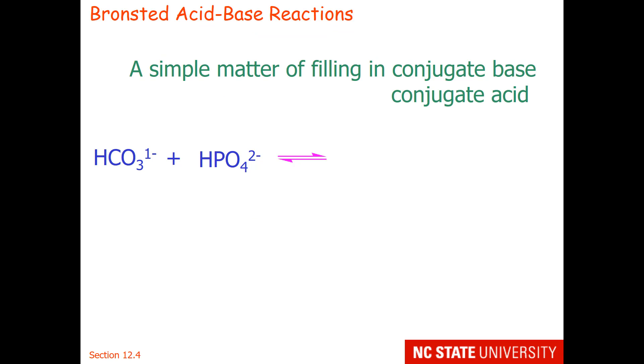Now things can obviously get more complicated. What if you were given amphiprotic species? Hydrogen carbonate and hydrogen phosphate are amphiprotic. They can act as acids or bases.